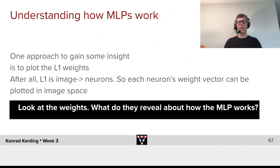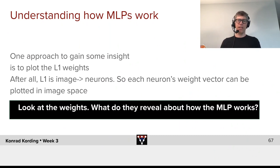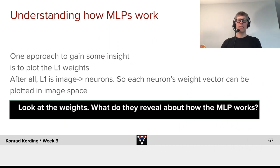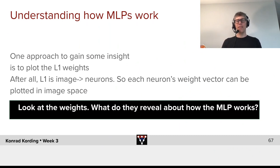One way of understanding how multi-layer perceptrons work is trying to visualize what you have. One approach to gain some insight is to plot the weights of the first layer. After all, what is the first layer? Well, it goes from an image to a first set of neurons, which means the weight vectors actually lie in image space — which means we can visualize them and see if they give us insights into what they mean.